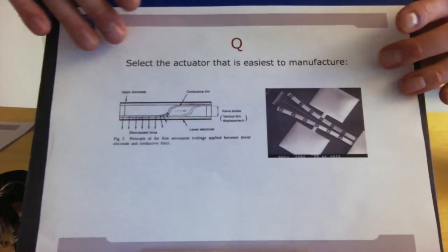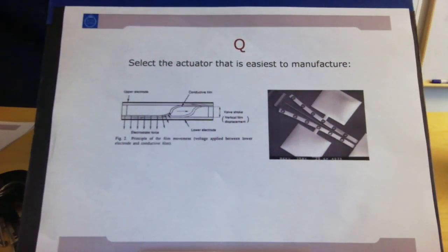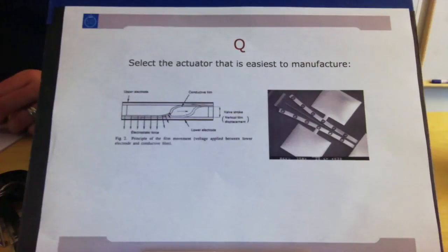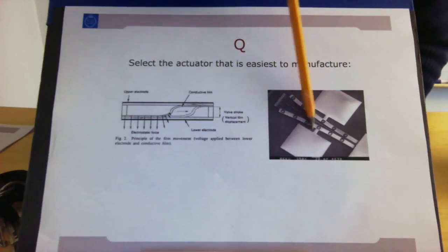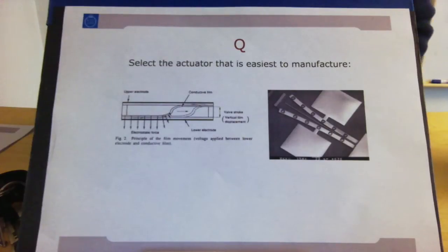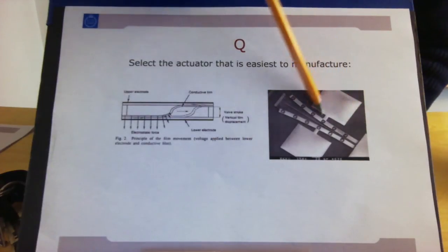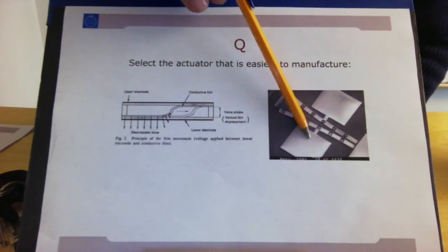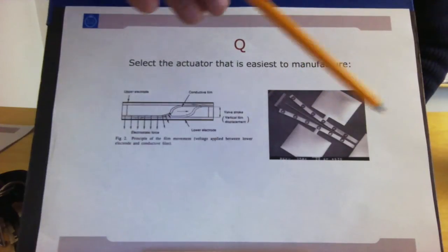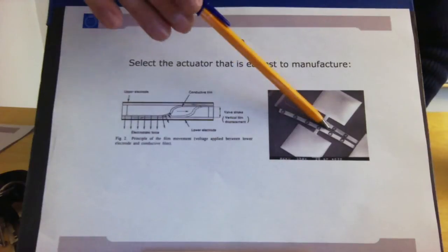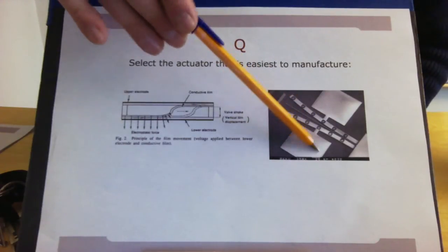Let's now have a quiz question. We've seen two types of actuators — a rolling actuator in an out-of-plane version and an in-plane version. The question is: which actuator type do you think is easiest to manufacture? The answer is that most likely the in-plane actuator will be easiest to manufacture. It is fabricated in a single lithography step — it's a surface micromachined structure, etched in a single step with one layer of photoresist, and then the structure is under-etched so that the movable structures become free while the large structures remain fixed on the substrate.